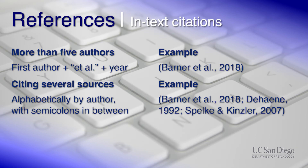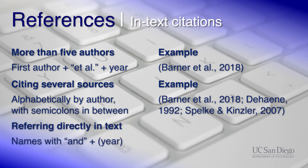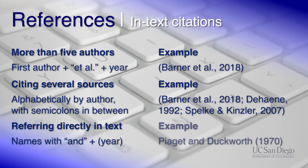Finally, if you want to refer to a source directly in the text, such as Piaget and Duckworth, 1970, generally the same rules apply, except the year is in parentheses, and instead of ampersands, you spell out the word 'and.' These rules cover the most common in-text citations. For more information, please refer to the APA Publication Manual and the links below.